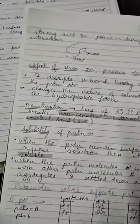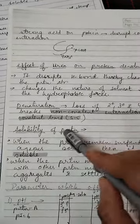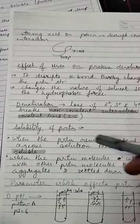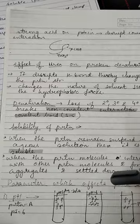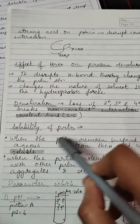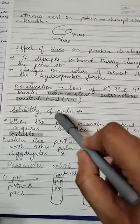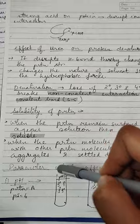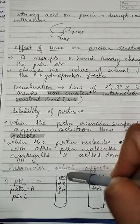Good evening friends, today we are going to talk about the solubility of proteins. So what is solubility of protein? When a protein is said to be soluble when it is in a solution. The factors which affect the solubility of protein are pH, ionic strength, covalent bond, and temperature.